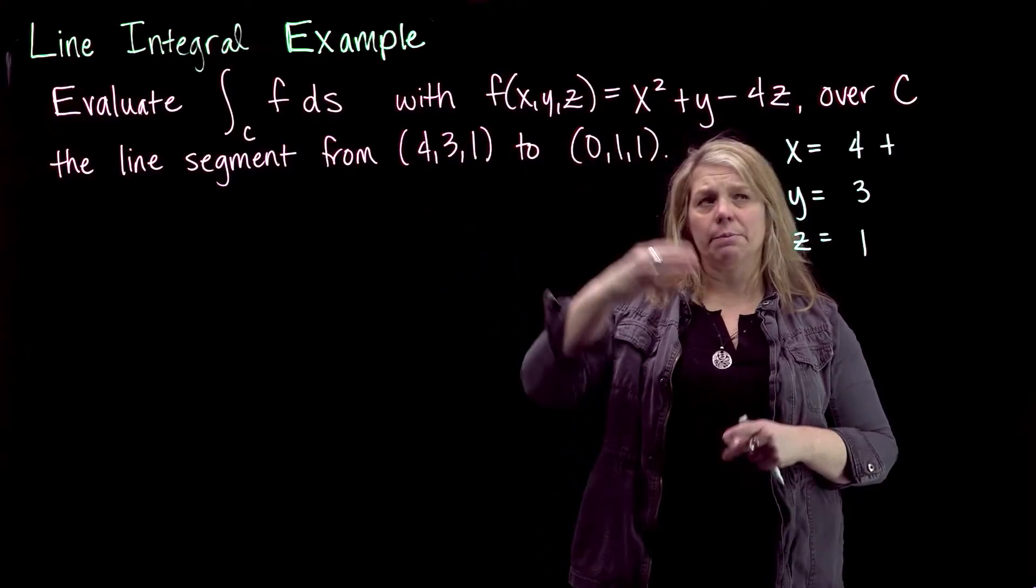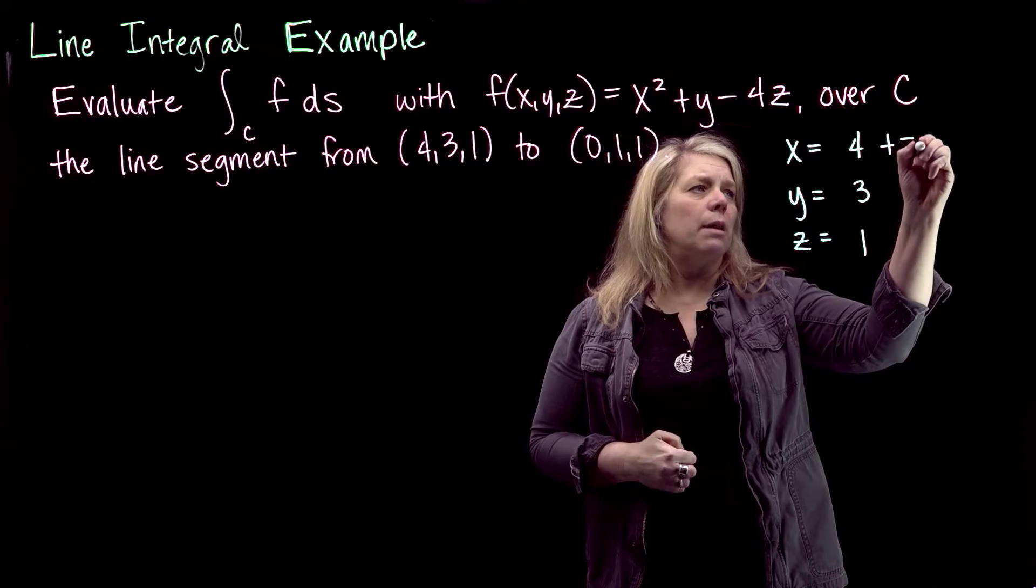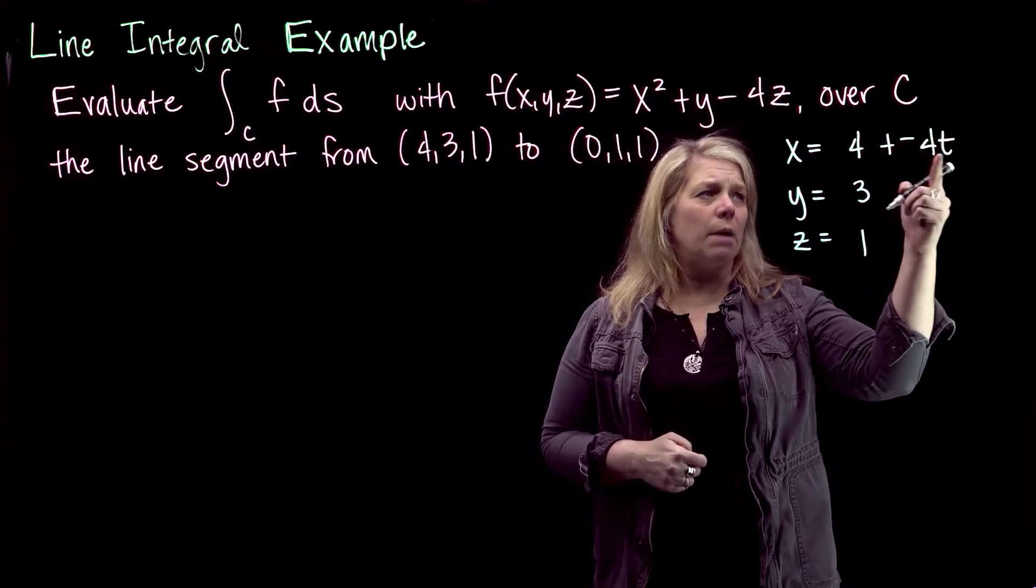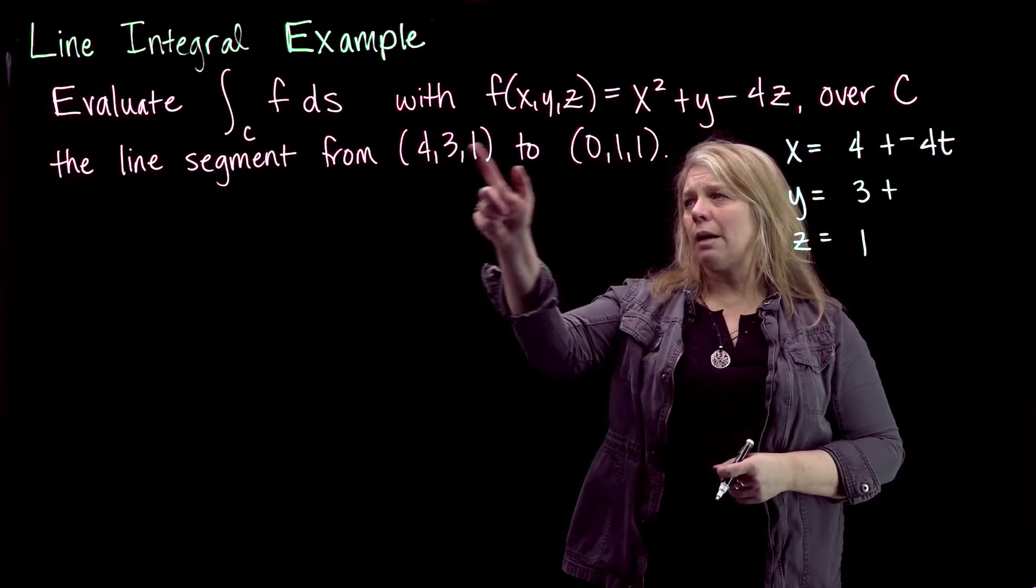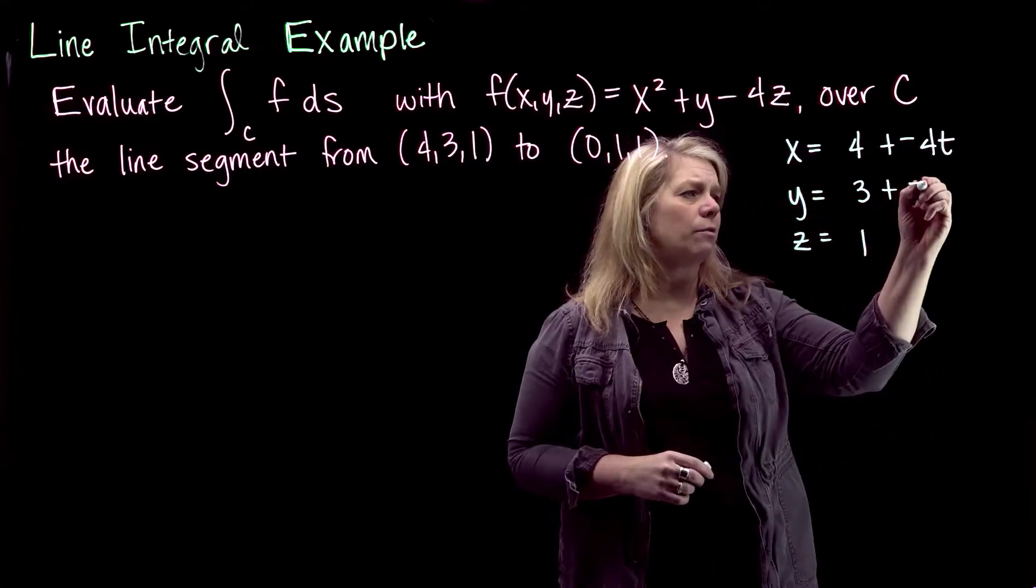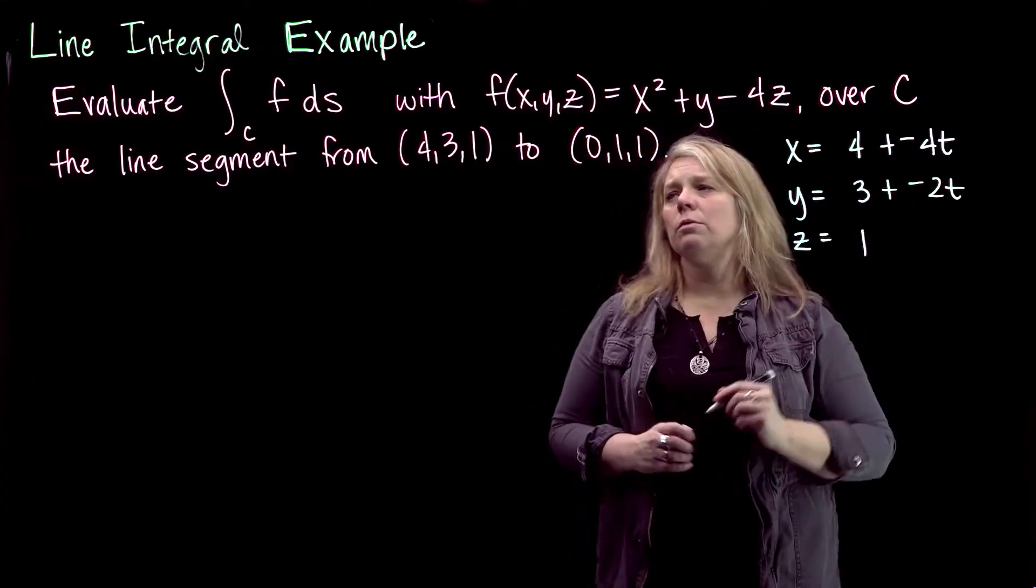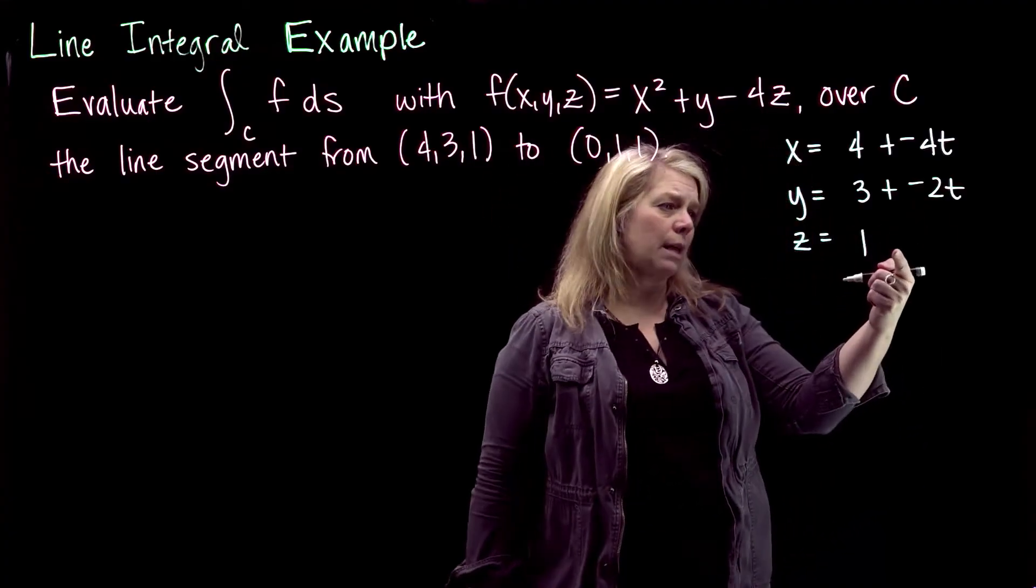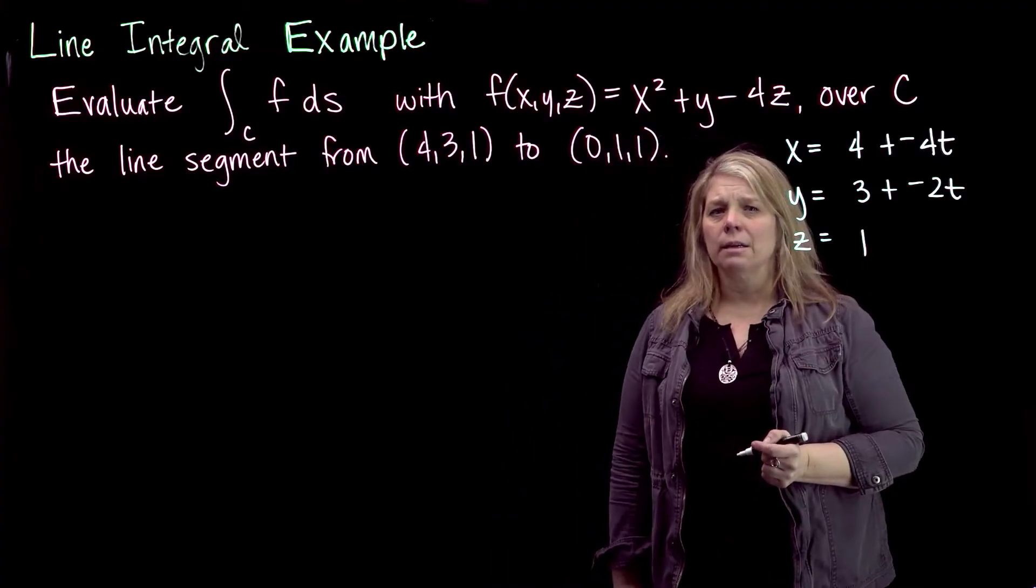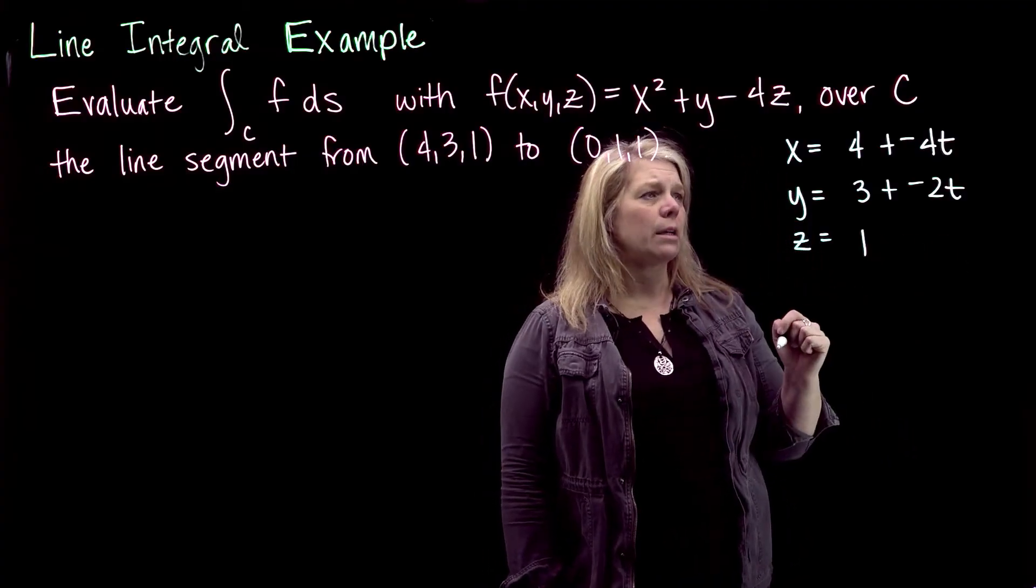So the x will decrease by 4, so this will be minus 4t, and then for the y, the y value is decreased by 2, so I'll have minus 2t, and for the z, that doesn't change, so I can put plus 0t, or I can just leave this z equals 1.